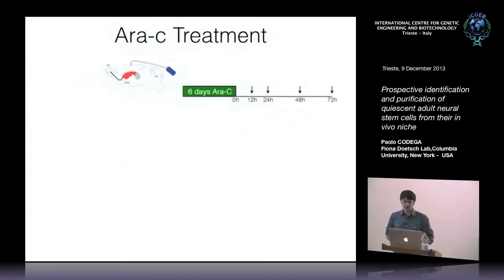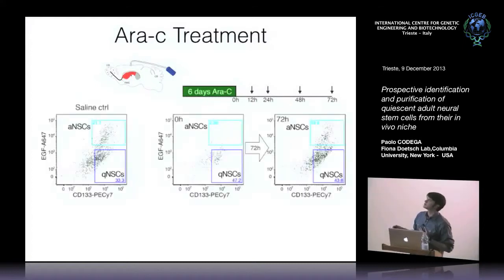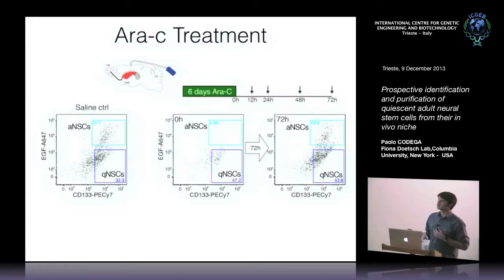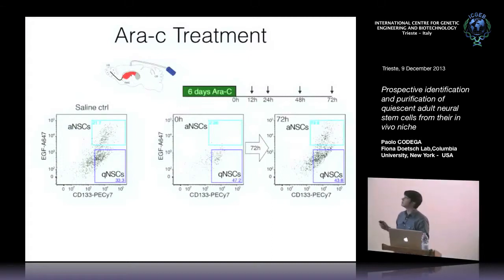We then tested the behavior of these populations in a regeneration model. After six days of AraC infusion, the activated neural stem cells were gone, while quiescent neural stem cells largely survived the treatment. But after three days of recovery, the activated population returned to its original quantity, showing that the quiescent cells replenished and regenerated the activated pool.